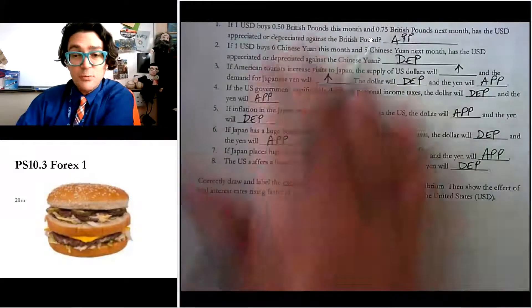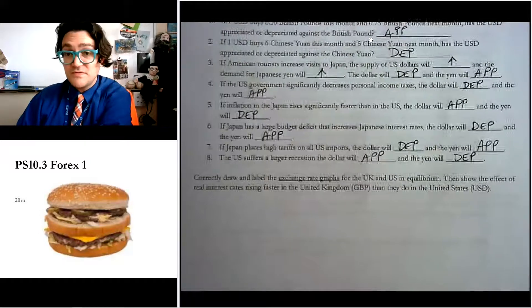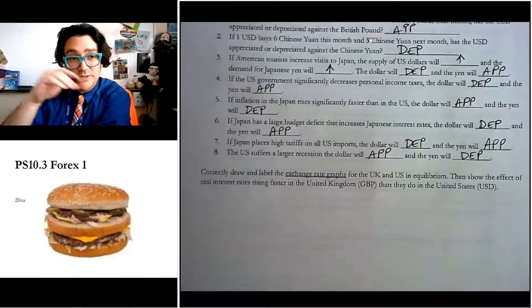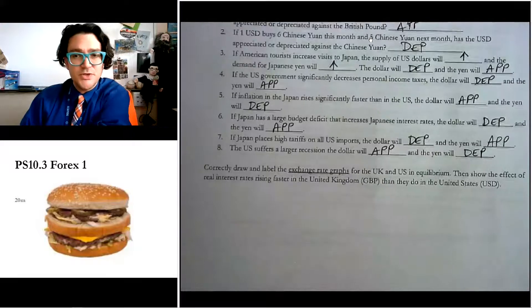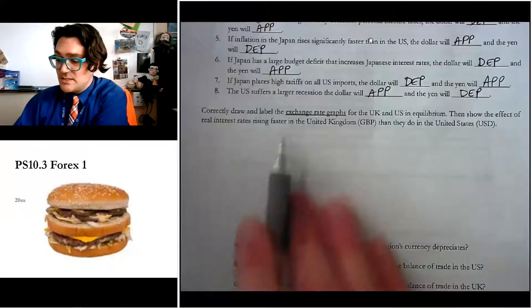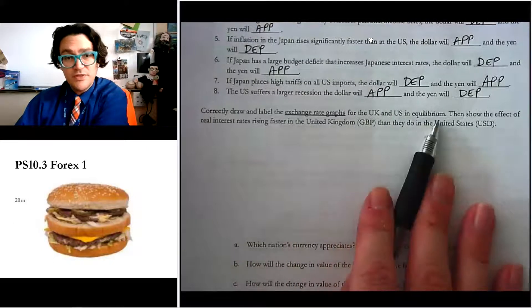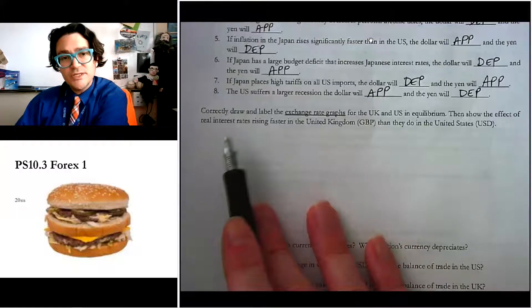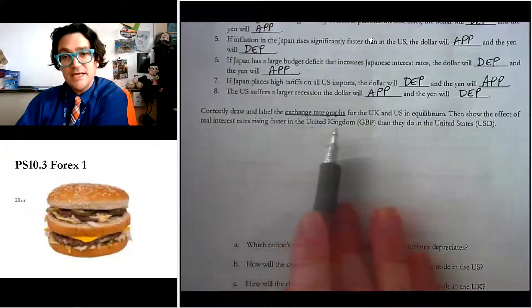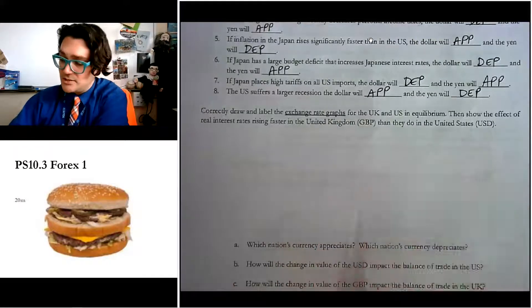All right. So that kind of works through without graphs, what a lot of these ideas are. It can be really tough. So it sometimes is helpful to draw a quick little sketch of two graphs next to each other to help you out with them. Let's try this with two graphs. Exchange rate graphs for the UK and the US in equilibrium. That's what we're going to start with. And then it says, then show the effect of real interest rates rising faster in the UK than in the United States. And we're given the abbreviation, Great Britain pound and US dollar.